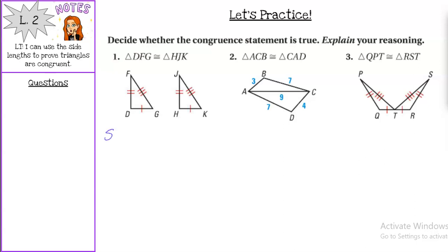Well, we have side DF is congruent to side HJ, we have side FG is congruent to side JK, and we have another side congruent from GD and HK. We have three congruent sides, so yes, the triangles are congruent by side-side-side.